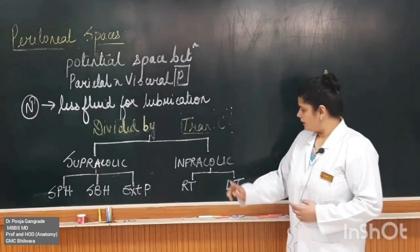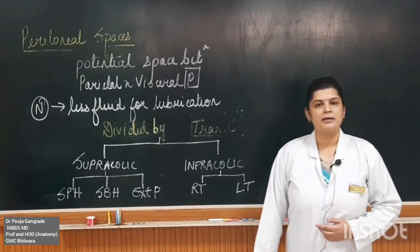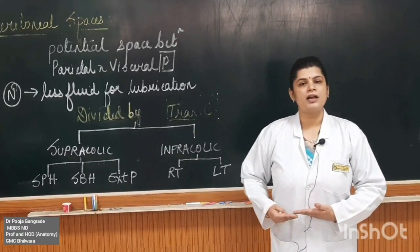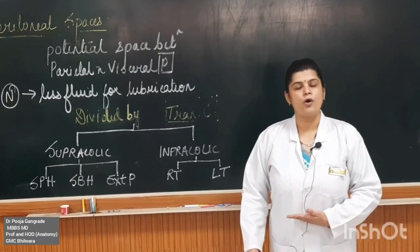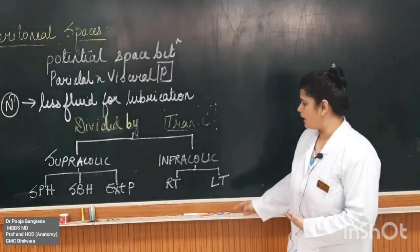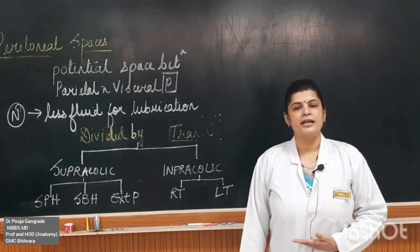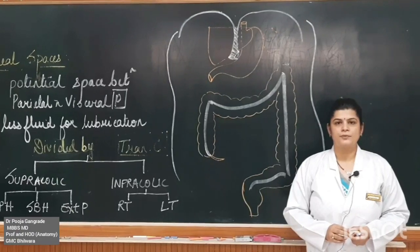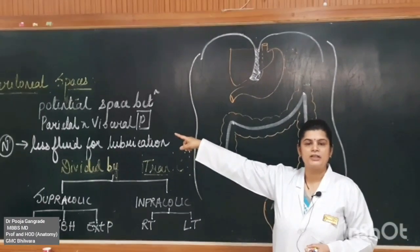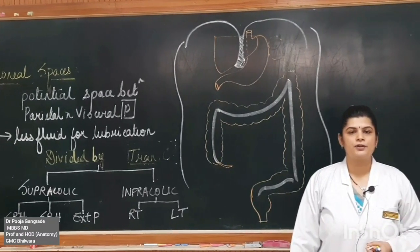Next, we come down to the infra-colic compartment. The infra-colic compartment is the one present below the transverse colon, and it basically forms the paracolic gutters. These are divided into right and left sides. Now please concentrate on this diagram. We are going to explain the potential spaces — the supra-colic and the infra-colic compartments.